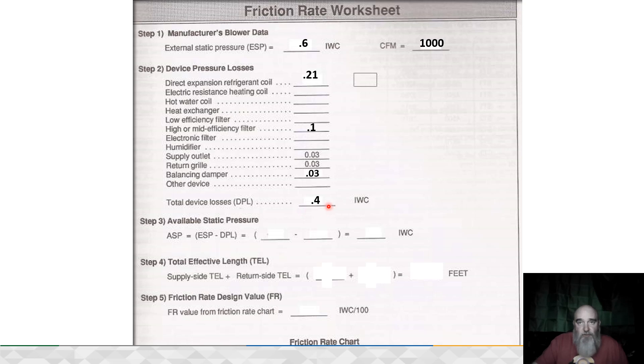Our total device losses, when we add them up, come up to 0.4. Some real easy math in step three is our external static pressure from above minus our device losses from step two, gives us an available static pressure of 0.2.